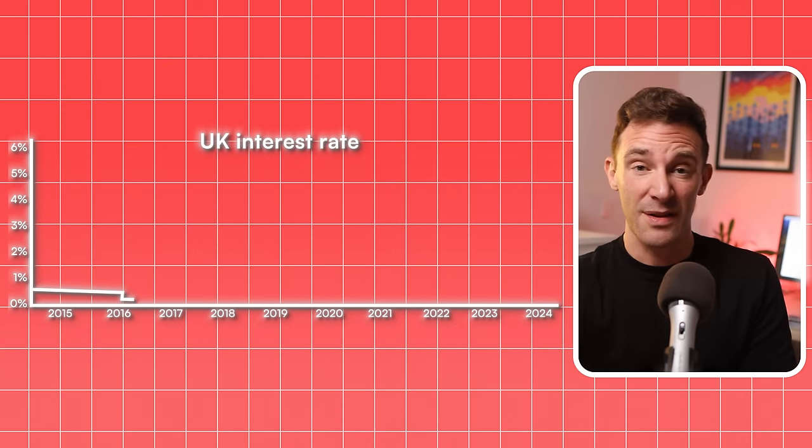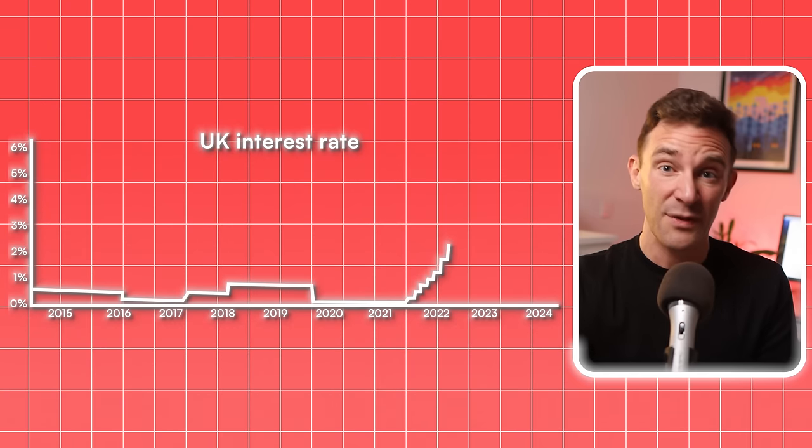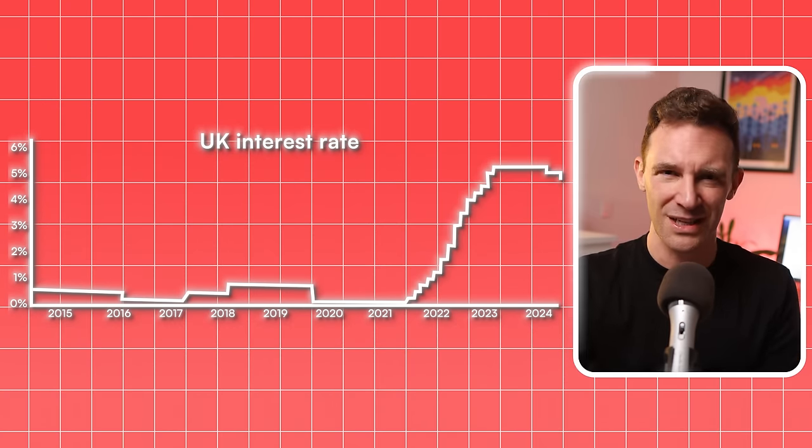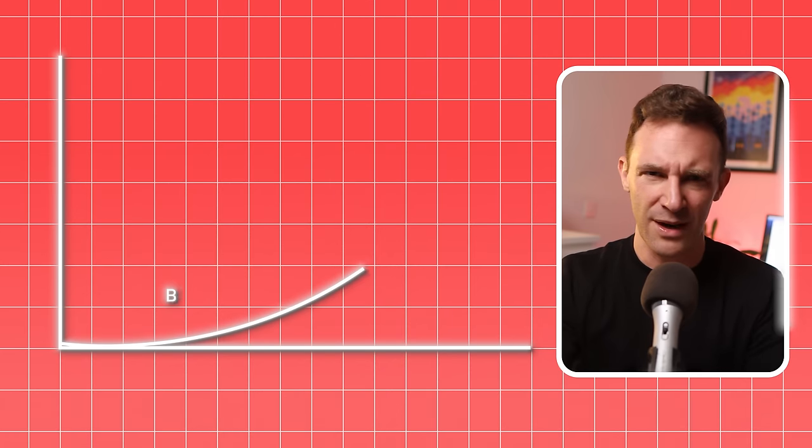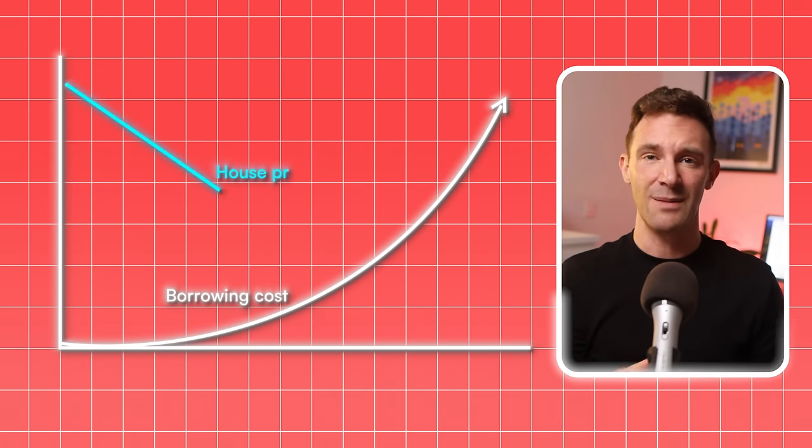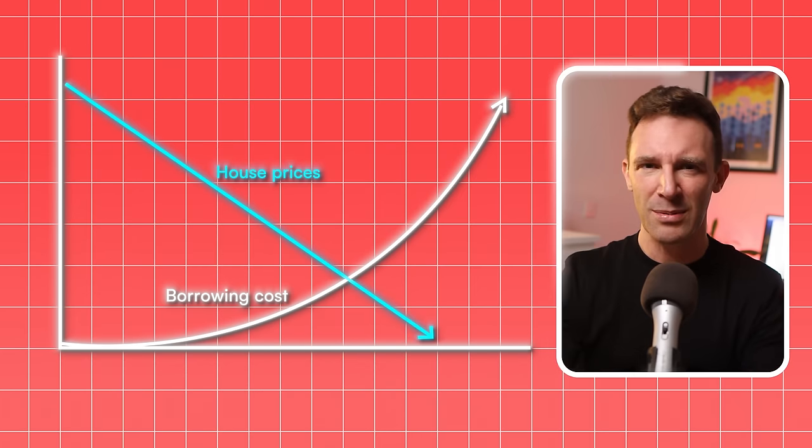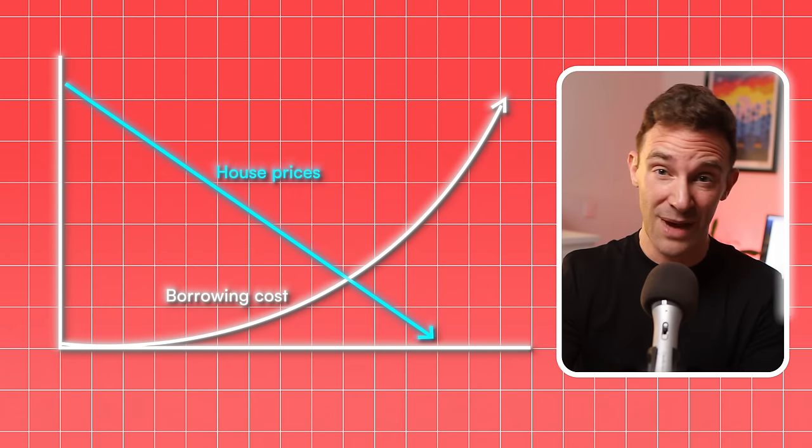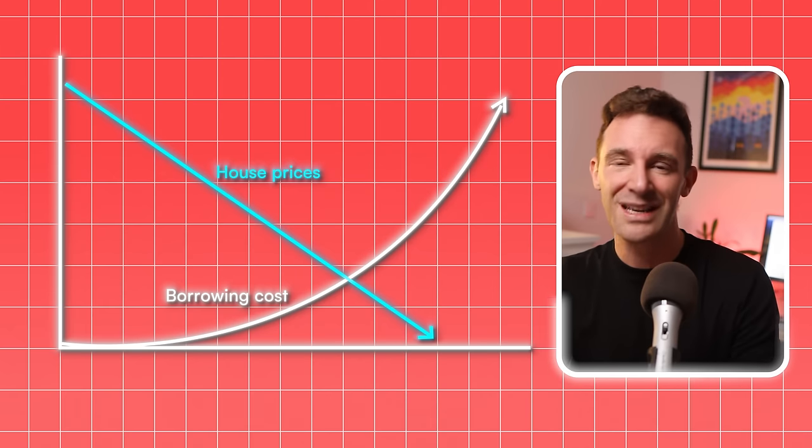But this is where things get weird. Up until the last few months, interest rates haven't been falling. In fact, for the last couple of years, they've skyrocketed. And in response, something completely unexpected happened. Or rather, didn't happen. You'd think that when the cost of borrowing goes through the roof, house prices would come crashing down. After all, fewer people can afford mortgages, and those who can shouldn't be able to borrow as much, given how high their monthly payments would be.